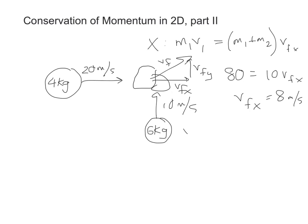For the y direction, the only one that's going to initially appear is the 6 kg object. The 4 kg is moving horizontally, it has no momentum along the y axis. So it's going to not appear in any way, just m2 v2. And then same idea, combined mass and v final y. So this will end up giving me the y component of the final velocity. m2 v2 is 60, combined mass is still 10, so v final y is 6 meters per second.